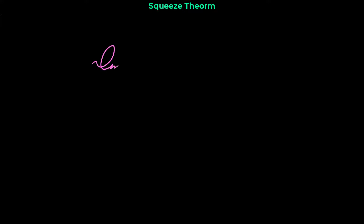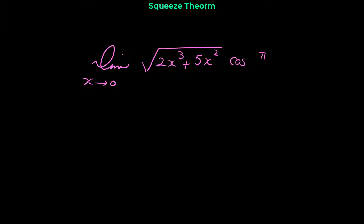Hello and welcome. In this video I want to show you some examples of the squeeze theorem, or sandwich theorem. If you want to learn more about squeeze theorem, watch my other video about this theorem. Here I'm going to directly show you the questions — I'm not going to go over the theorem itself. The first question is: use the squeeze theorem to show that the limit as x approaches 0 of √(2x³ + 5x²) · cos(π/x) is equal to 0.